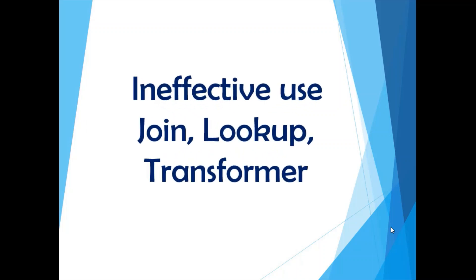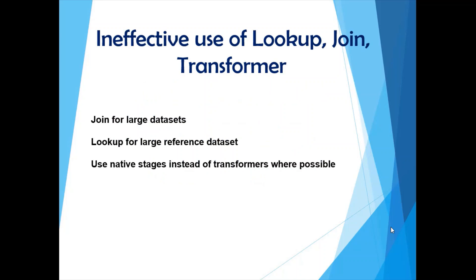The third mistake is the ineffective use of join, lookup, and transformer stages. Join and lookup are easily confused because they have a similar function. A key thing to remember is that a lookup stage should be used when your primary data source is smaller in volume and your reference dataset is big enough but small enough to fit entirely into RAM — because having the whole reference dataset in memory makes the lookup operation very fast. Joins should be used when your primary and secondary link data is high in volume, because joins use sorting and partitioning which makes the process faster.